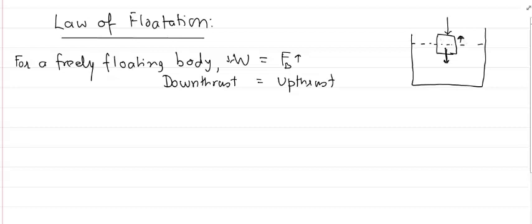Similarly, upthrust includes the force of the liquid acting upward, plus any other agency applying a force on the object in the upward direction. So the law of flotation essentially says that for a freely floating body, all the forces acting downward are equal and opposite to all forces acting upward. For simplicity, we will use the equation W = FB.